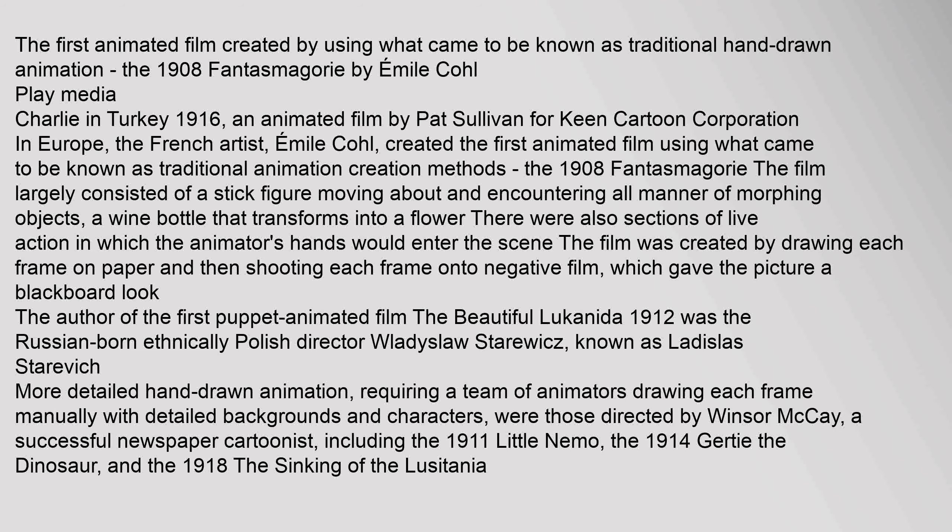Phantasmagory largely consisted of a stick figure moving about and encountering morphing objects, such as a wine bottle that transforms into a flower. The film was created by drawing each frame on paper and then shooting each frame onto negative film, giving the picture a blackboard look. The author of the first puppet animated film, The Beautiful Lucanita (1912), was Russian-born ethnically Polish director Władysław Starowicz. More detailed hand-drawn animation requiring teams of animators were those directed by Winsor McKay, a successful newspaper cartoonist.